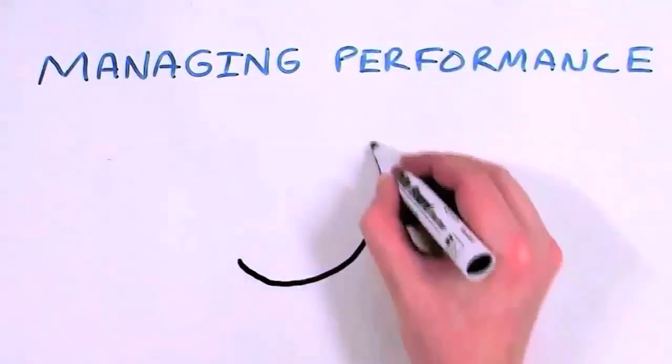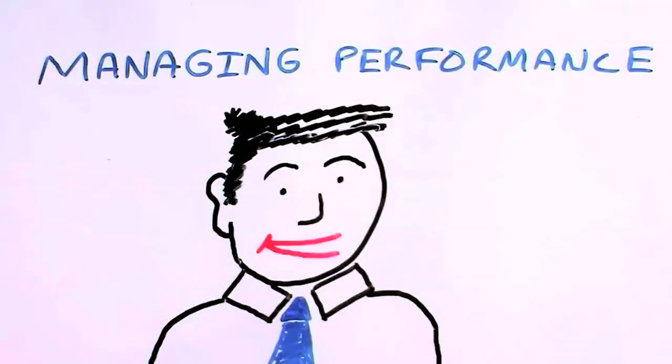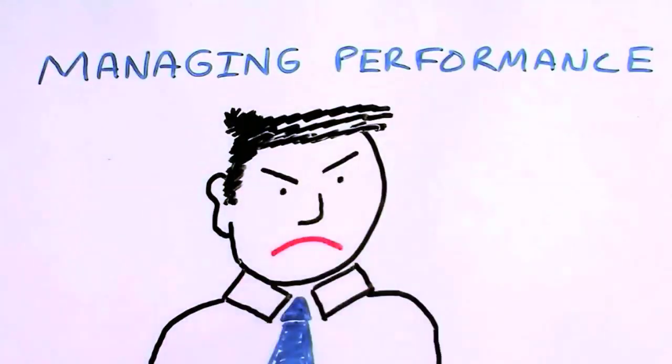Most managers have a two-part system when they look at managing performance. Simply, either they are friends with their employees and therefore everything is fine, or they are not getting on, and this necessitates the management of the performance or conduct issue.